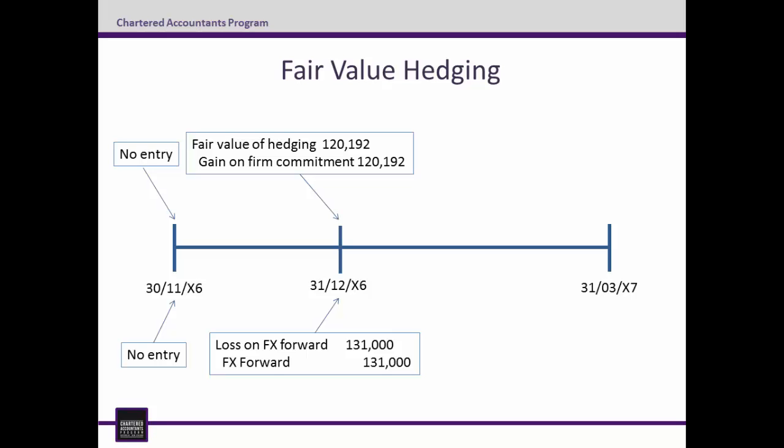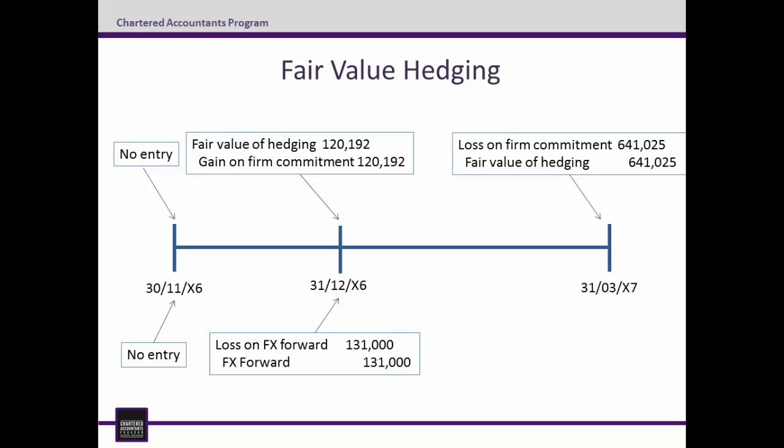Step 5 and the final step for fair value hedging is the entry that takes place on the 31st of March 2007. We repeat the process from the previous date but with updated information. With the Aussie weakening against the Euro, the fair value of the firm commitment has increased to $8,333,333. On the 31st of December it was valued at $7,692,308. This means the value of the firm commitment has increased $641,025 in the last three months. As this is an expected increase in the cost of inventory for EasyBits, this isn't good for them. The entry is debit loss $641,025 and credit fair value of hedging $641,025.